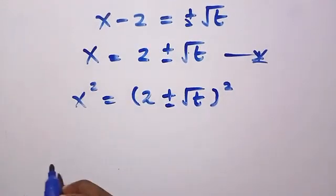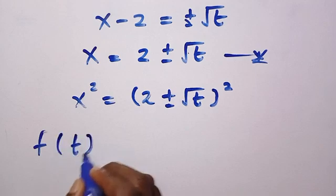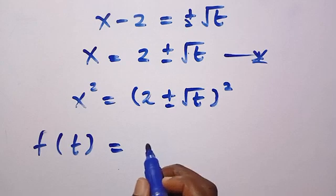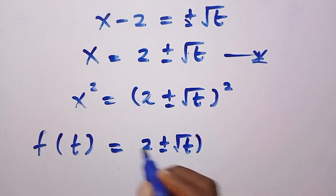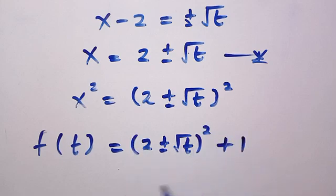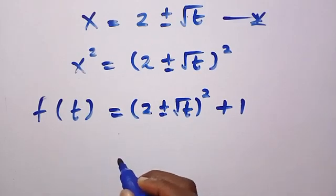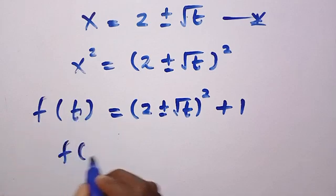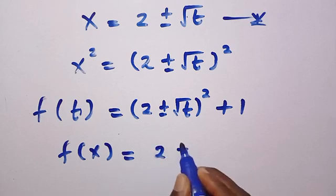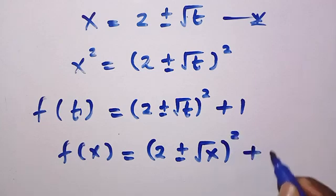Now we substitute back into the function. f of (x squared minus 4x plus 4), which is represented by t, equals x squared plus 1. So x squared is (2 plus or minus the square root of t) squared, giving f of t equals (2 plus or minus the square root of t) squared plus 1. Since t and x are both real numbers and interchangeable, we replace t with x: f of x equals (2 plus or minus the square root of x) squared plus 1.